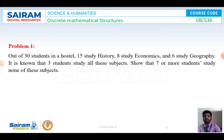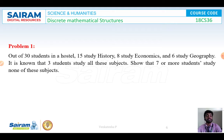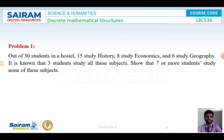Now we will discuss some problems based on the principle of inclusion and exclusion. The problem is: out of 30 students in a hostel, 15 students study history, 8 students study economics, 6 students study geography. It is known that 3 students study all these subjects. We have to show that 7 or more students study none of these subjects. The first thing is to find the finite set S and then define the events A1, A2, A3.